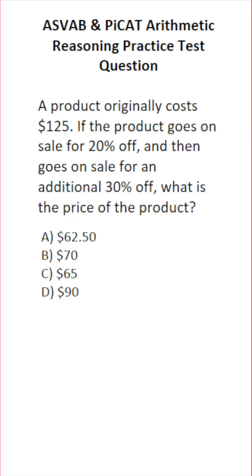In this case, the one thing you cannot do is combine 20% and 30% and take a 50% discount. That will get you the wrong answer.